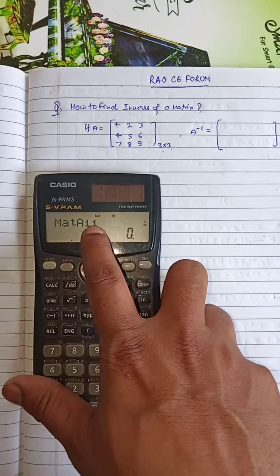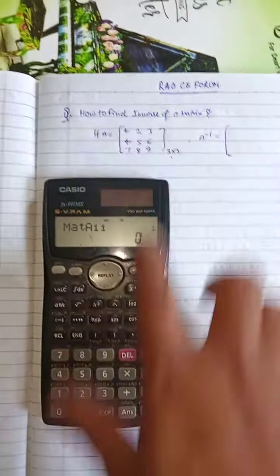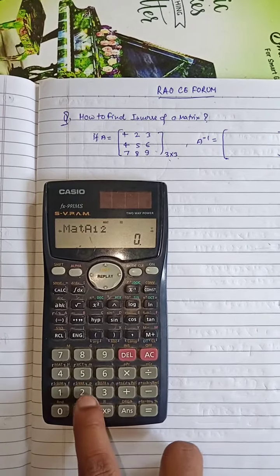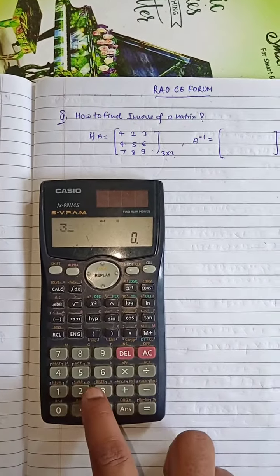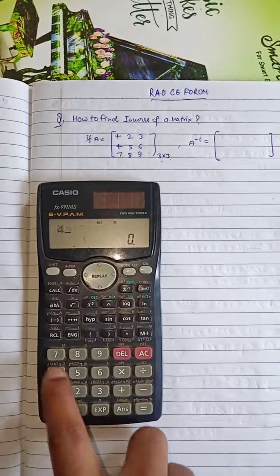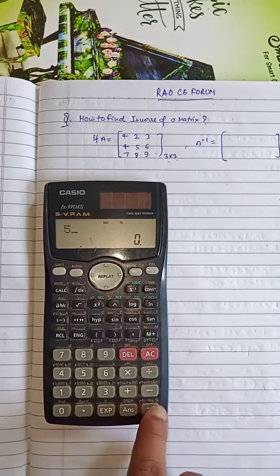Enter the first element in first row, first column, which is 4, then 2, 3, 4, 5, and so on for all elements.